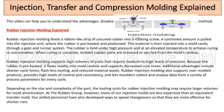The rubber is injected through a gate and runner system and held under high pressure at an elevated temperature to achieve curing or vulcanization. When curing is complete, molded rubber parts are removed or ejected from the mold's cavities.